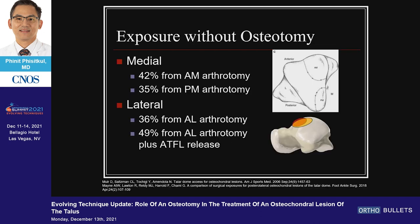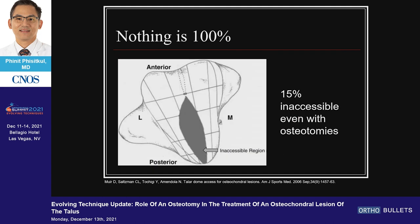Exposure can be done with osteotomy on the medial side, ranging from 35% to 42% from the posteromedial osteotomy. On the lateral side, 36% from the anterolateral, and 49% when you release the ATFL. But nothing is 100% — even with medial or lateral osteotomy, there's a 15% area in the center that's not accessible.